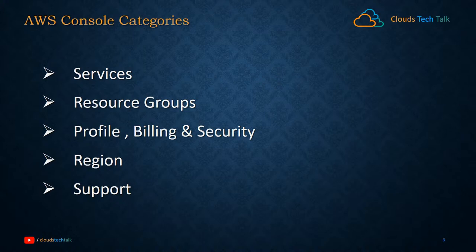The fourth one is region. I hope you have already followed previous videos in this AWS series and are now completely aware of what an AWS region is. In this section you can explore all the regions and change or switch your region. For example, if you are currently using the Mumbai region in India, you can switch it to Sydney, Australia.